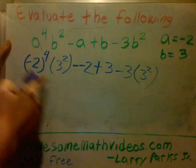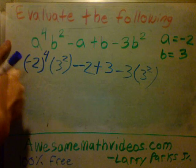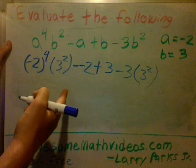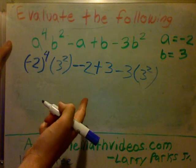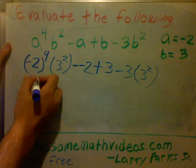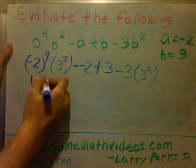It means you multiply minus 2 four times. So minus 2 times minus 2 is 4, times minus 2 is minus 8, times minus 2 is 16. So this is 16. 3 to the second is 9.